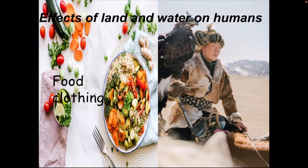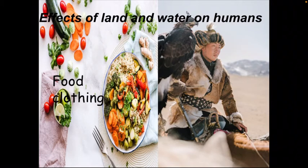Just like food, land and water also affect how we live. People living in mountains or hills are more likely to wear warm clothes to protect themselves from the cold. Unlike mountain regions, people in plains and colder regions dress according to their seasons. This is how land and water affect human beings.